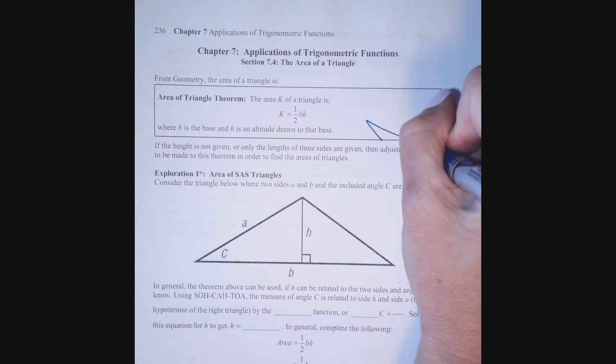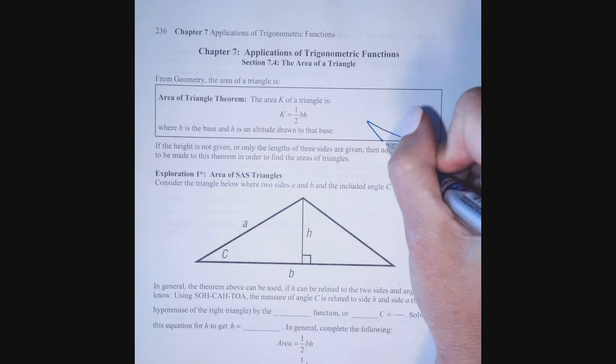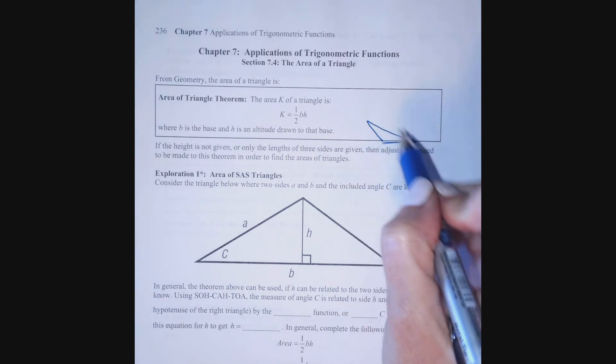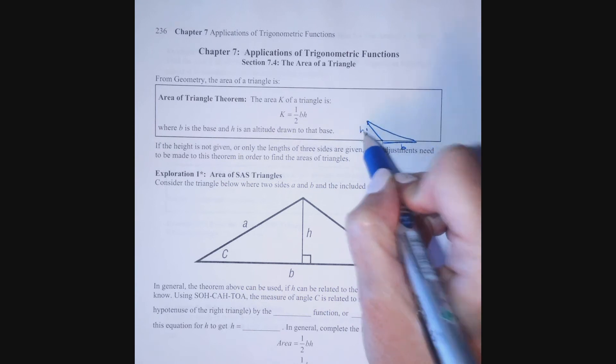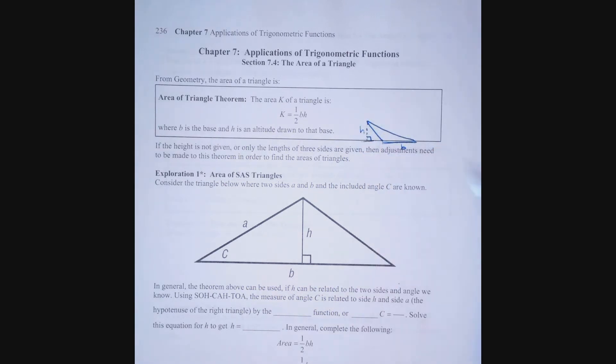For example, if I have an obtuse triangle, this would be the base and this measure perpendicular to the base would be my height so that I have the area is one-half base times height.